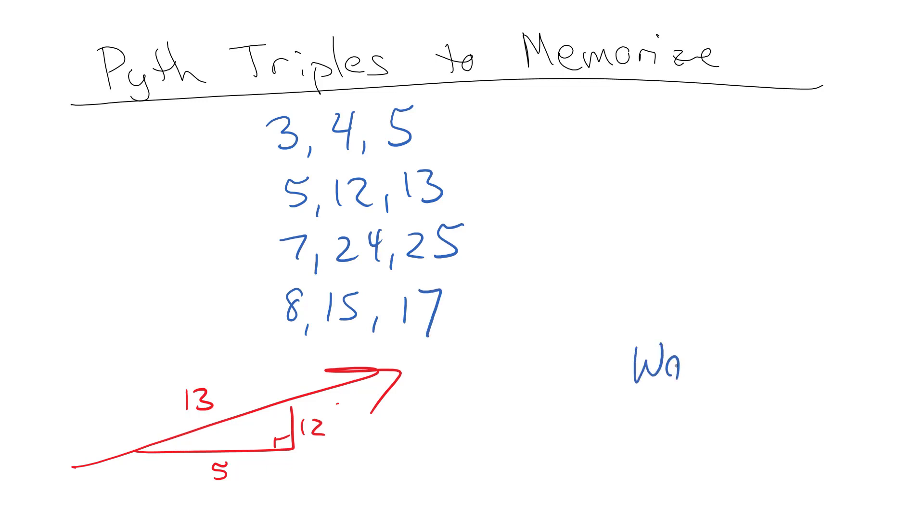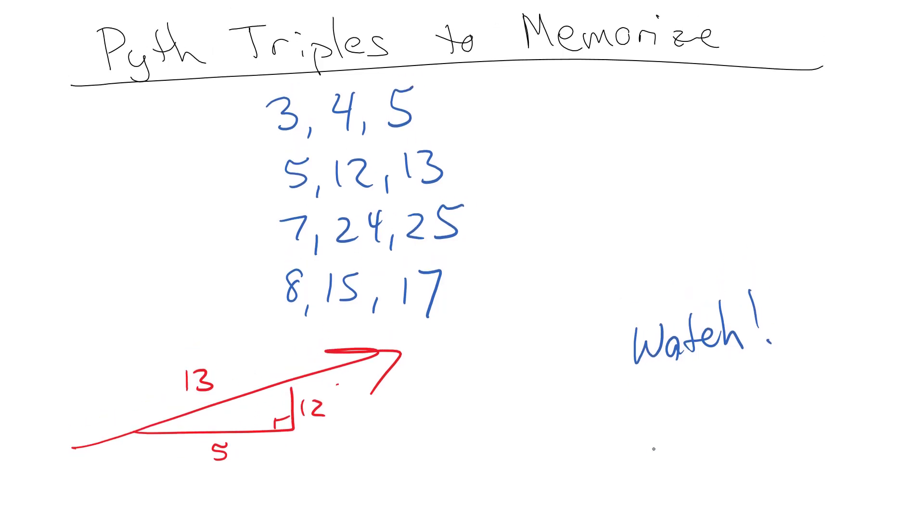Now be careful because these Pythagorean triples only work if the triple part, the third one, is on the hypotenuse. For example, if I gave you something here that said I don't know, three and four, this is whatever it is, it's not five. It's not five, we'll call it x. That side would be x squared plus three squared equals four squared.